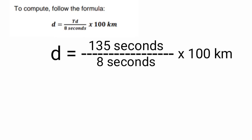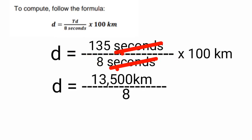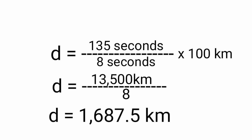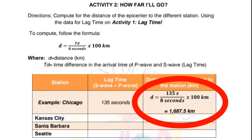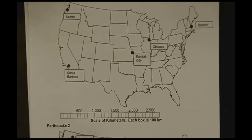D is equal to 135 seconds, the lag time, over 8 seconds times 100 kilometers. Just multiply, cancel the units. We have D is equal to 13,500 kilometers divided by 8 seconds. And the distance is 1687.5 kilometers. Now, after determining the distance, let's now do the triangulation method.